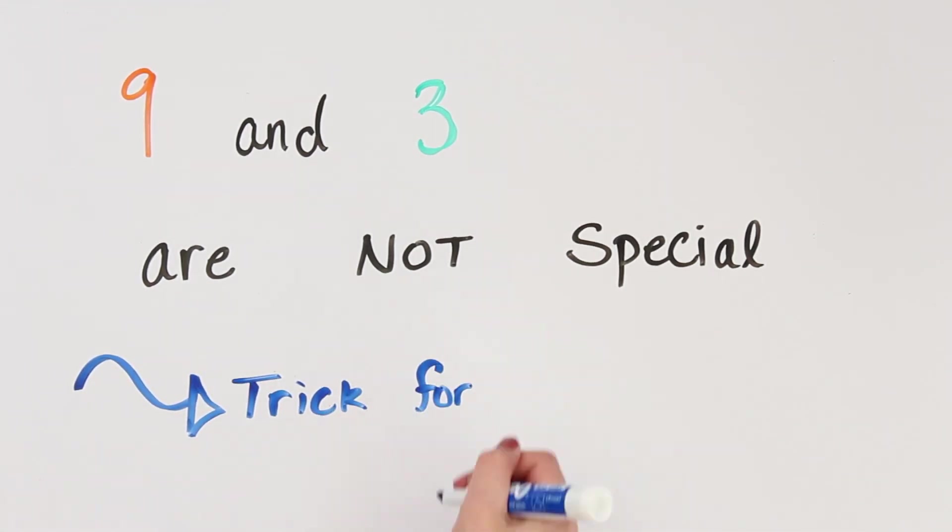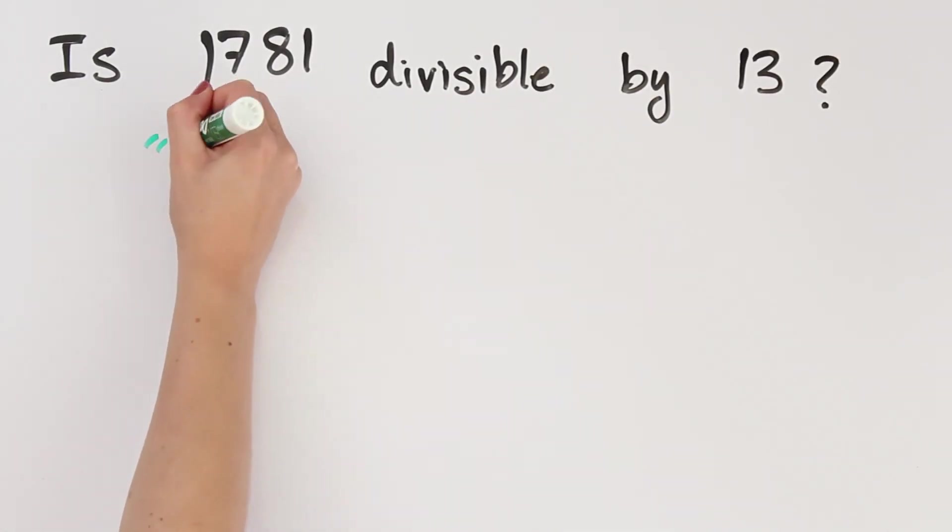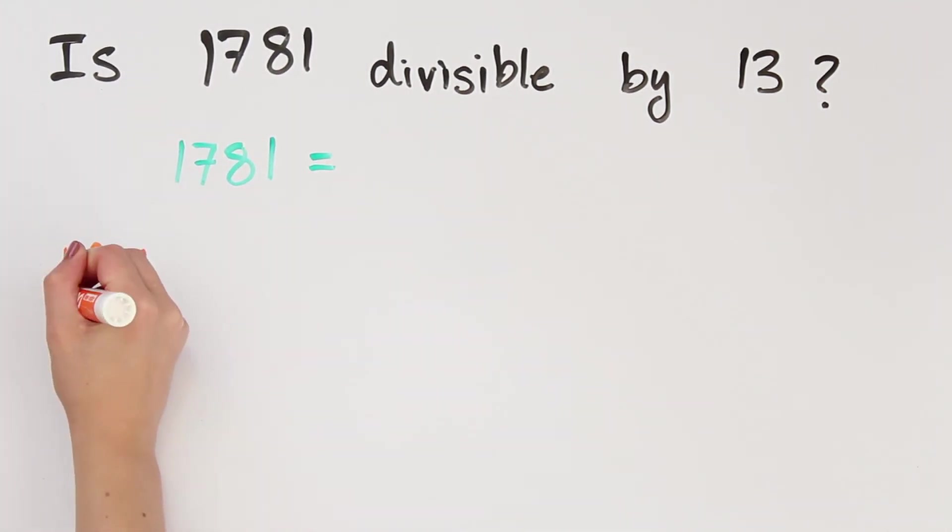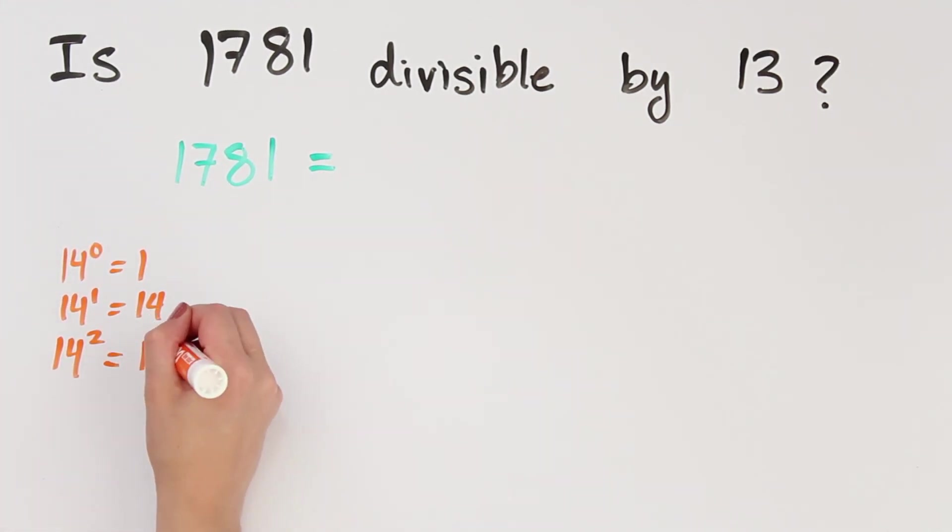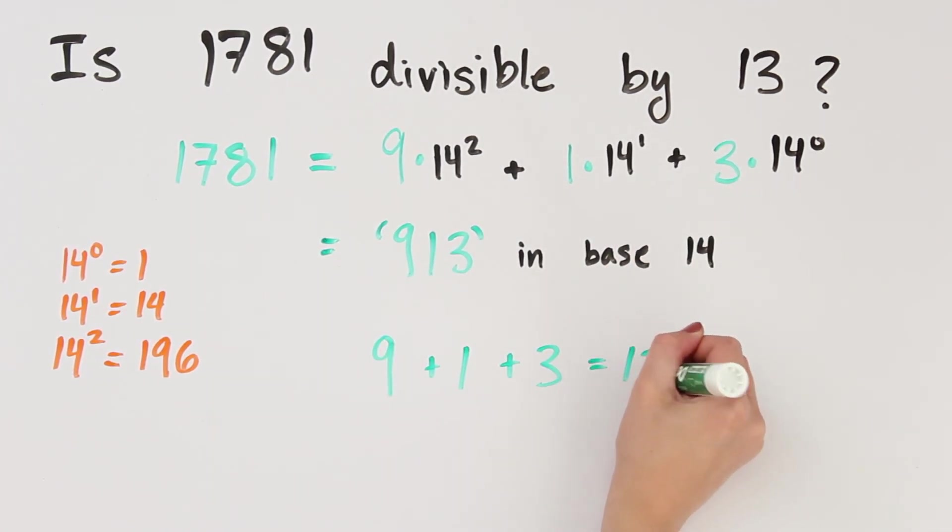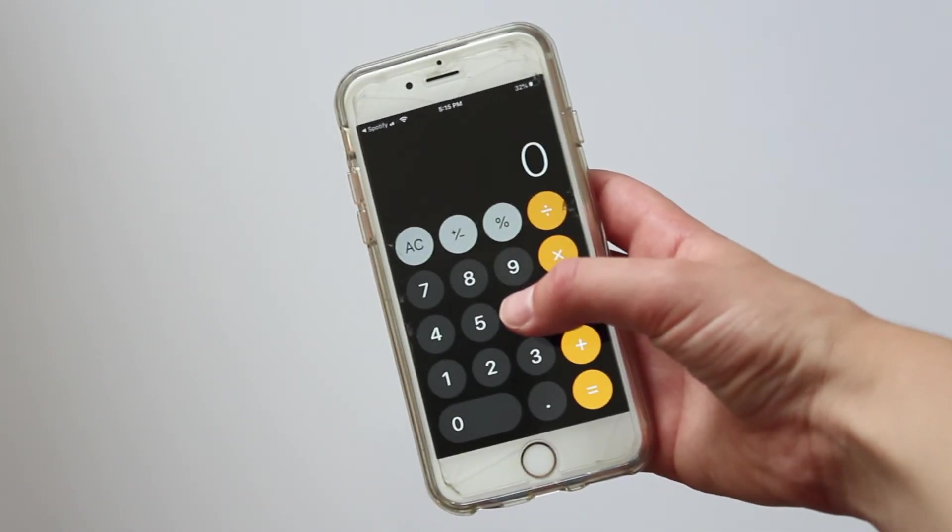So our takeaway for today is that 9 and 3 are not special. I mean, they are special if we're using base 10, which to be fair is most commonly used, but they're not special in the grand scheme of math. In fact, this tells us that there's a divisibility trick for any number. Suppose that someone asks you if 1781 is divisible by 13. All you have to do is write 1781 in base 14. So that's 9 times 14 squared plus 1 times 14 to the first power plus 3 times 14 to the 0. And 9 plus 1 plus 3 is 13, so that means 1781 is divisible by 13. But it might just be easier to grab a calculator.